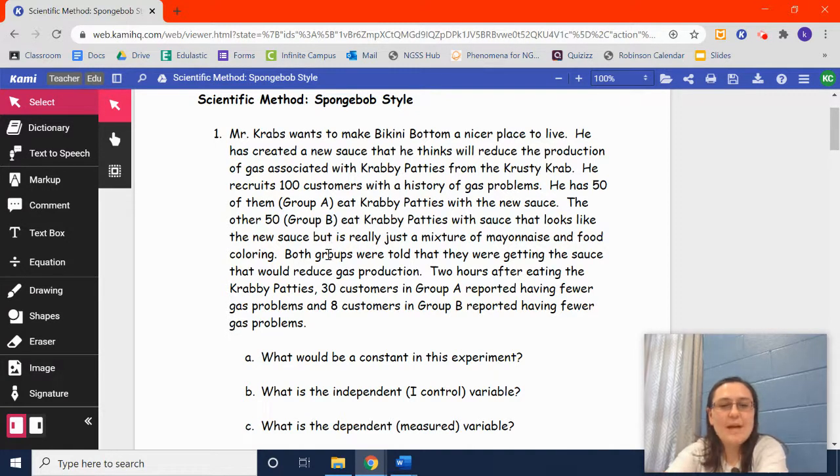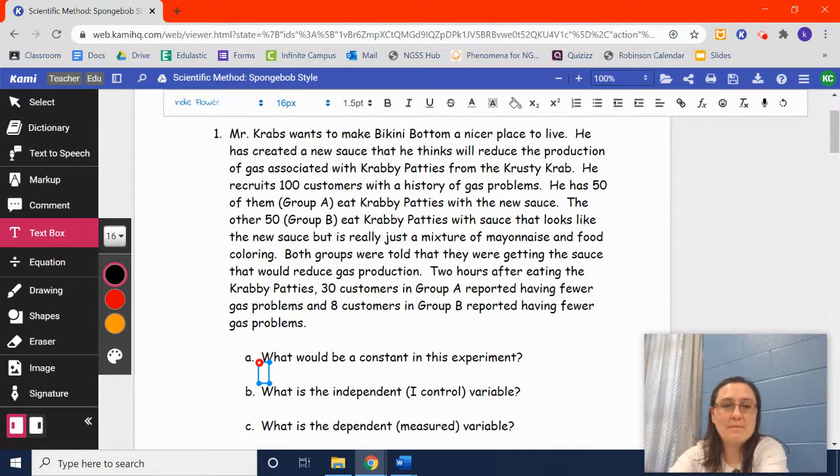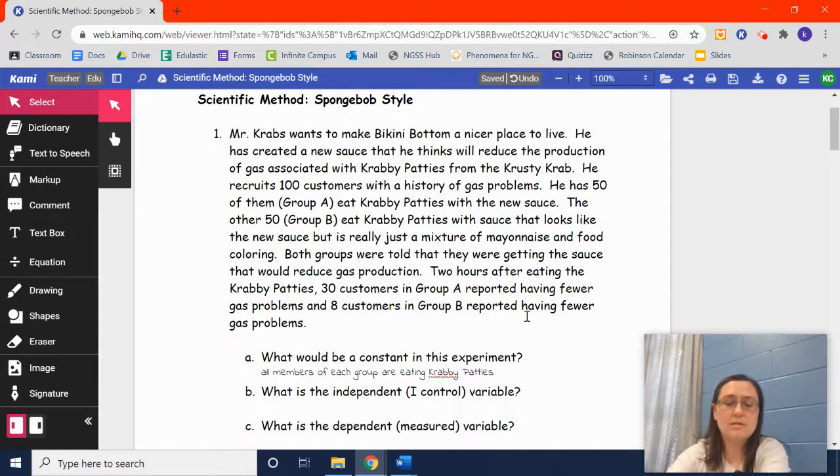So, he says, what would be a constant in this experiment? Remember that constants are things that are kept the same between different trials. So, the constant could be, one constant could be, that they're eating Krabby Patties. So, let's see, all members of each group are eating Krabby Patties. There are a bunch of different constants. If you can think of any other ones, put them in there. If you're not sure about them, let me know and we'll talk about it and see if they are in this scenario. But that's just one that's pretty obvious.